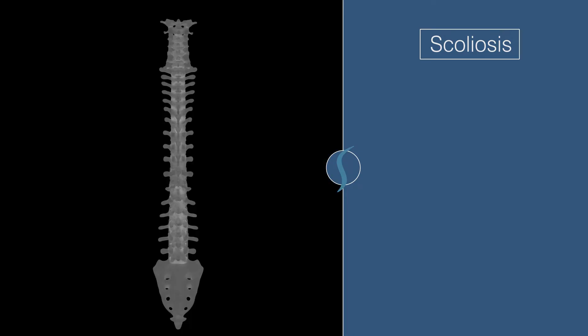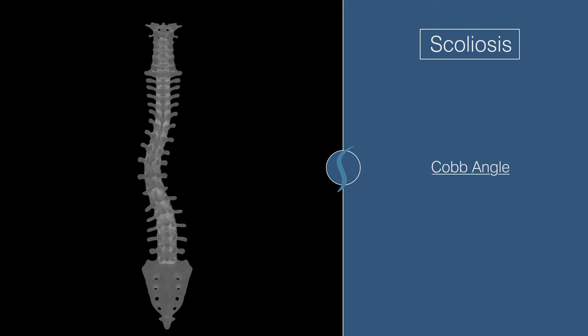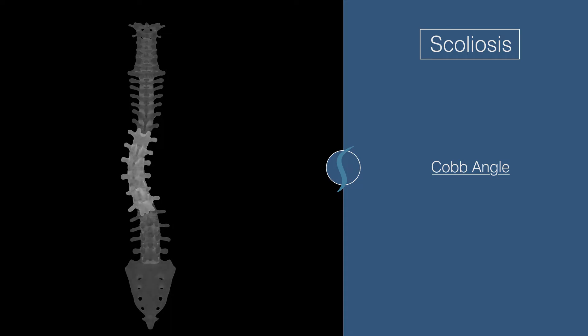The measurement of interest for scoliosis on X-rays is the so-called Cobb angle. To measure it, one must first identify which vertebrae are at the end of the curved deformity — their endplates will be the most tilted towards each other. Lines are then drawn across the endplates, and the angle created from the intersection of these two lines is measured. This measurement is what's referred to when discussing the degree of curvature.